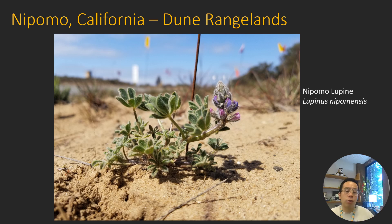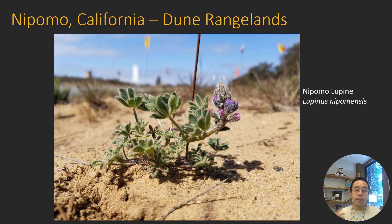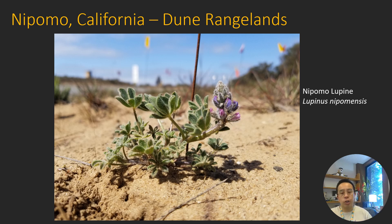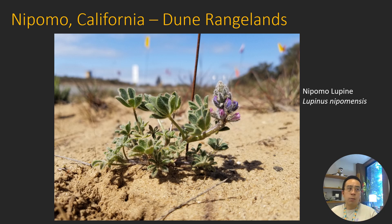The next example is from Nipomo, California, which are some dune rangelands. There we're specifically concerned about an endangered species called the Nipomo lupine, also known as Lupinus nipomensis. Most of its existing habitat is invaded by a noxious non-native grass called velvet grass, Aira caryophyllea, a bunch grass that grows and causes dune stabilization, often growing in dense populations, removing bare ground required for germination and causing shading and intense competition to this endangered plant.